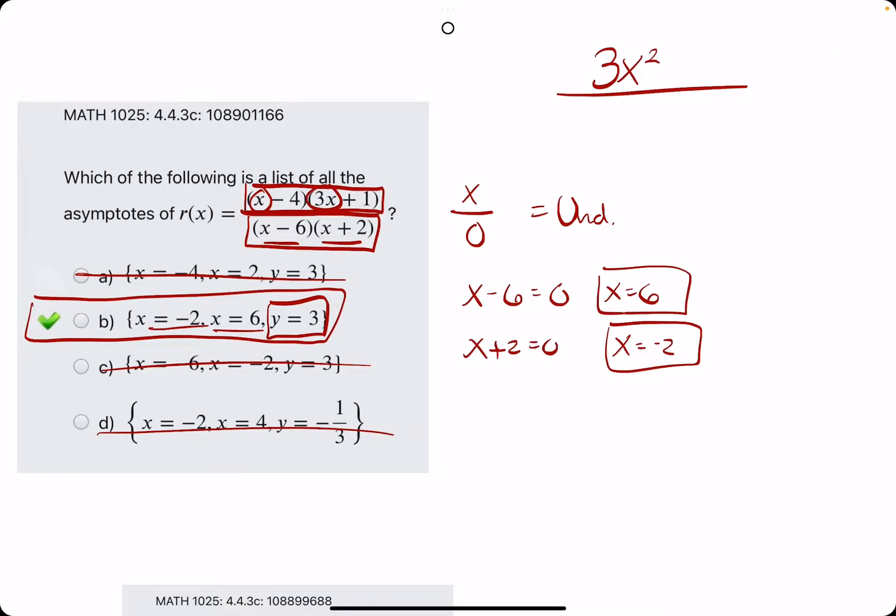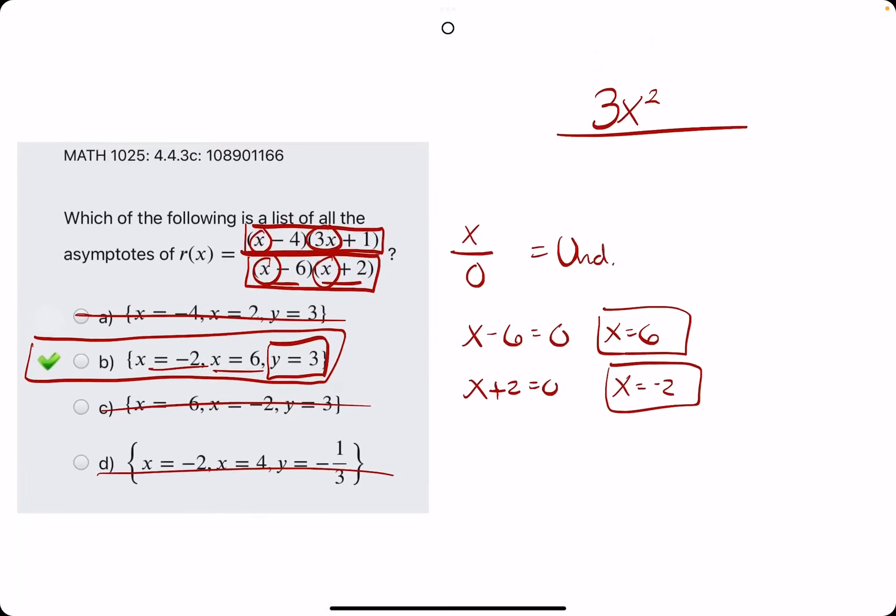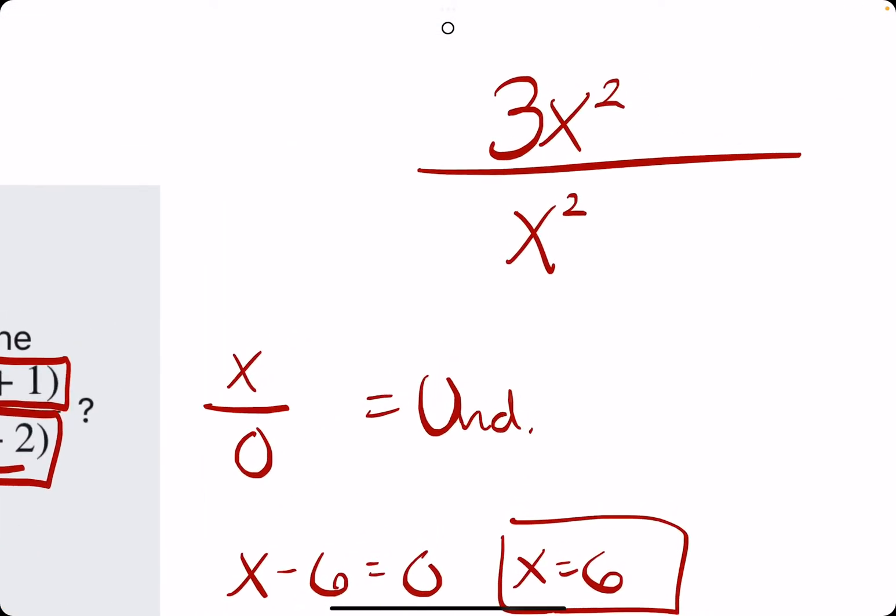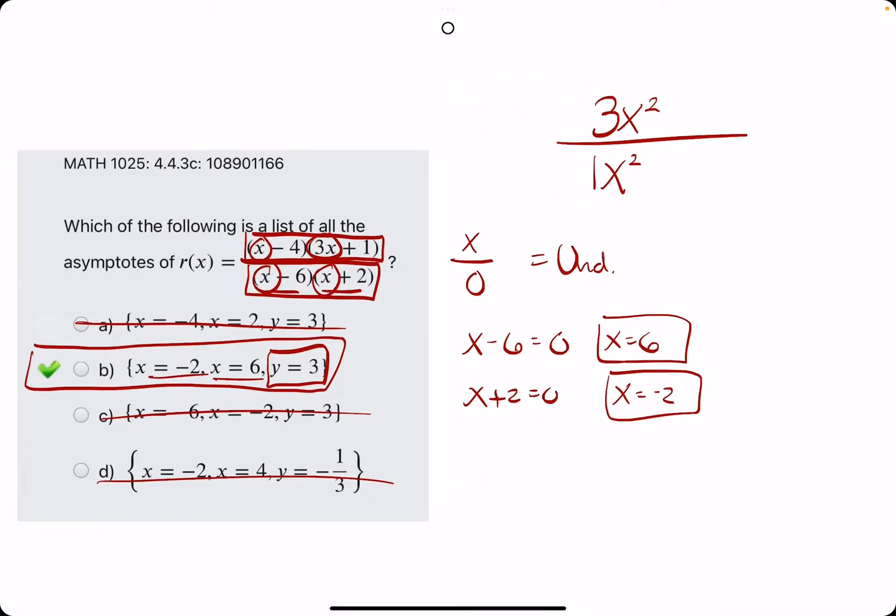It's really the main focus for horizontal asymptotes because you're just looking for the highest exponent term. You're looking for the degree of the numerator versus the degree of the denominator. So if we expanded the denominator, our x squared term would just be one x squared. So when we have three x squared divided by one x squared...